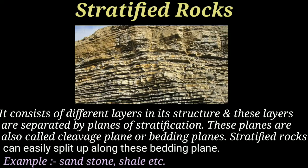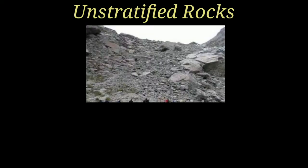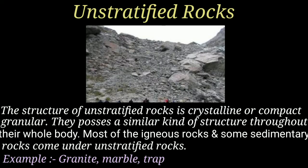Examples of stratified rocks include sandstone, limestone, shales, etc. Now the second type is unstratified rocks. The structure of unstratified rocks is crystalline and compact granular — it has no layered structure.